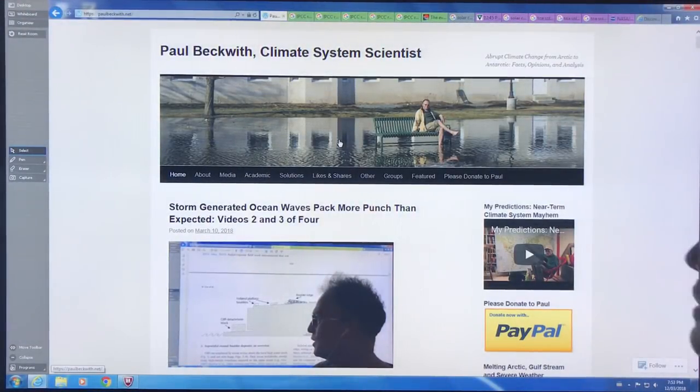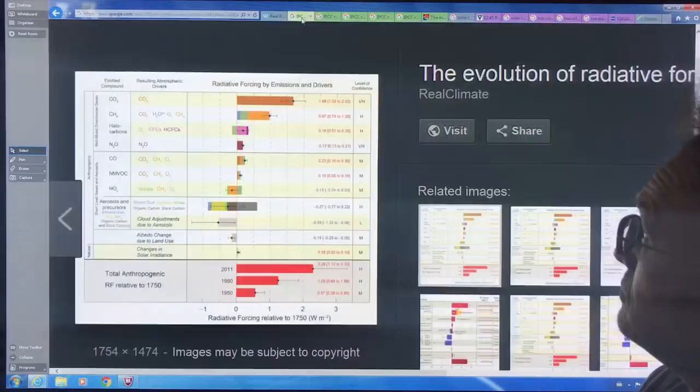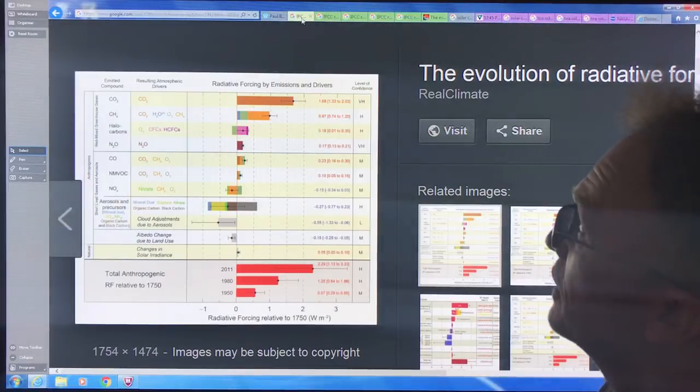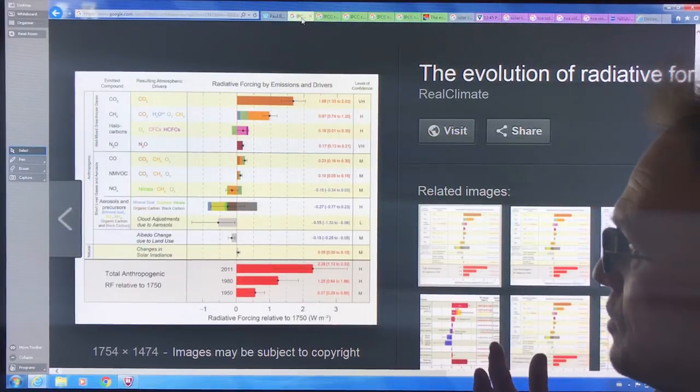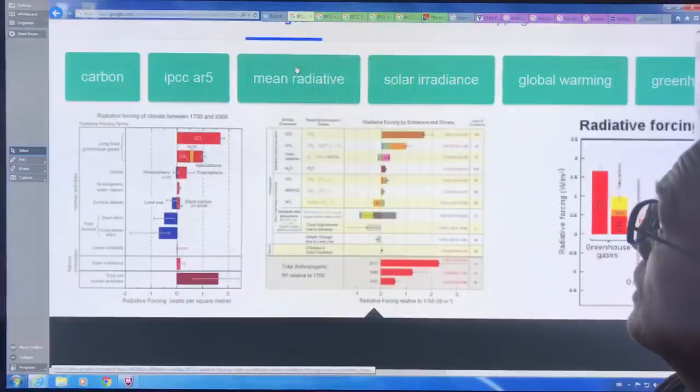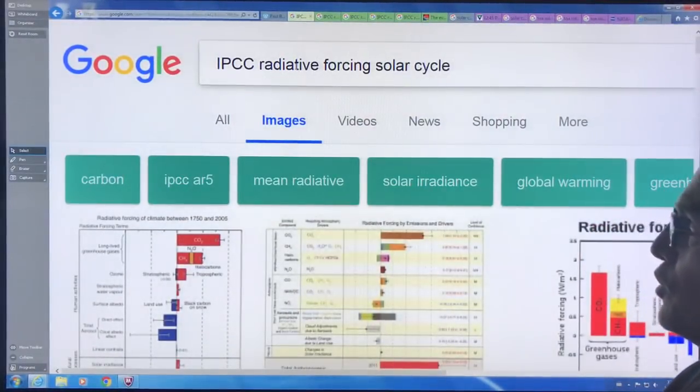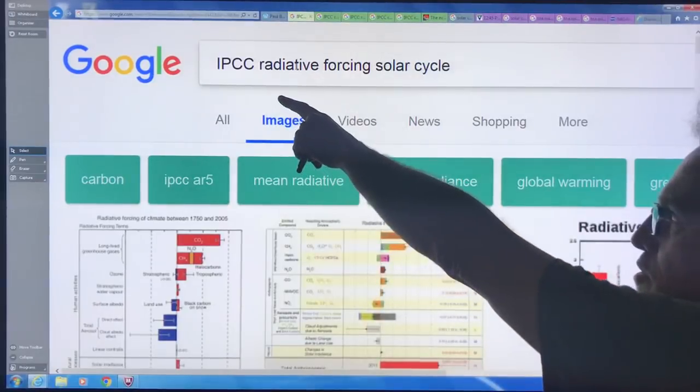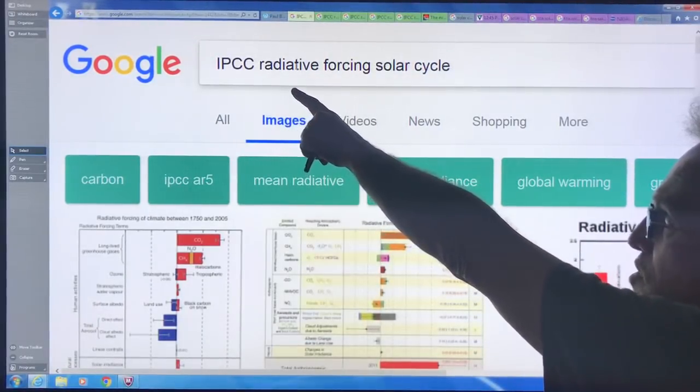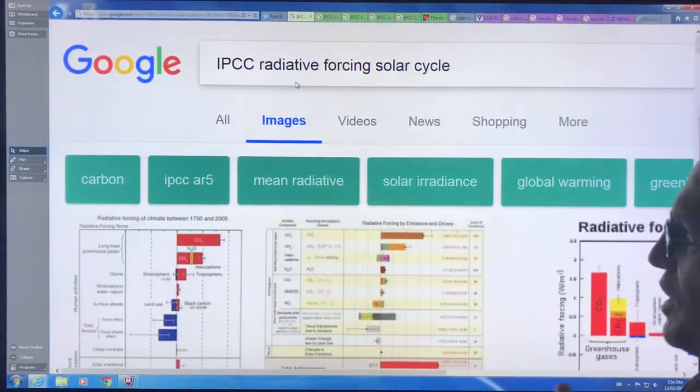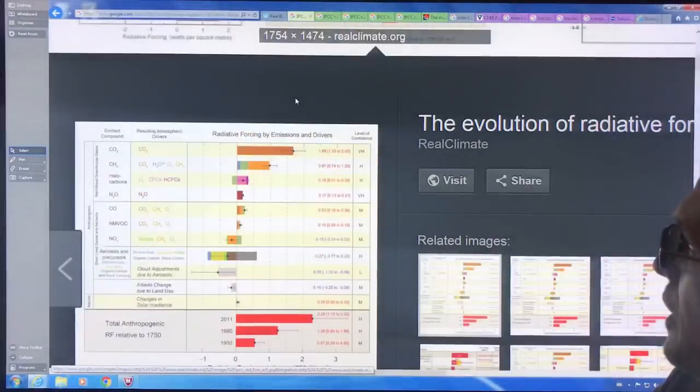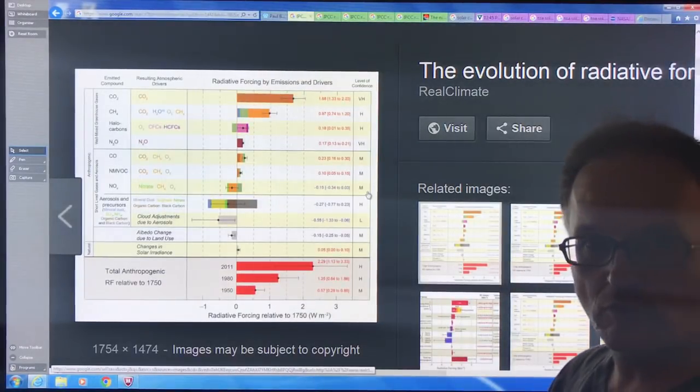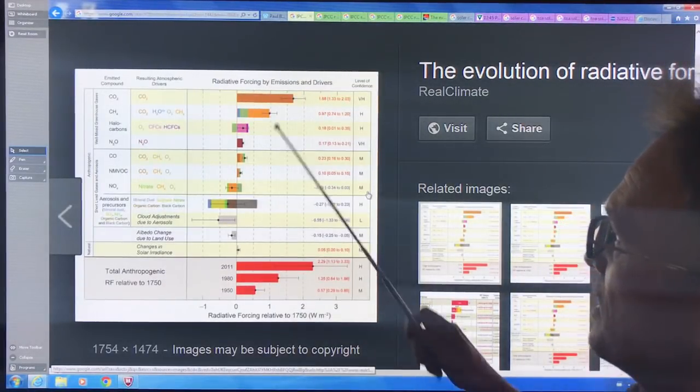Okay, so here's what we have. I went into Google Images, intergovernmental panel on climate change radiative forcing solar cycle, and I just clicked on this particular guy here and expanded it.